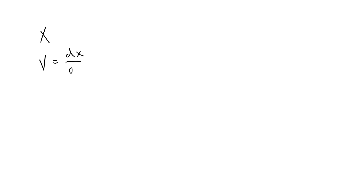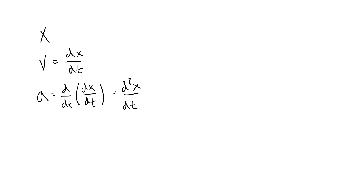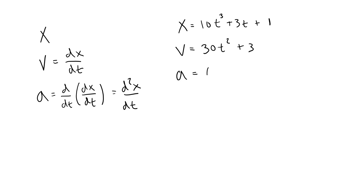Let's roadmap this. If you have some position equation, then velocity equals the derivative of that position equation with respect to time, and acceleration is the derivative of that derivative with respect to time — or the second derivative of position with respect to time. For example, if your position equation is 10t cubed plus 3t plus 1, your velocity equation would be 30t squared plus 3, and your acceleration equation would be 60t.